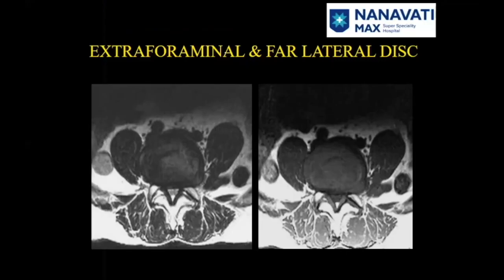This is extra-foraminal or far lateral disc herniation. This particular patient has a degenerated posteriorly bulging L5-S1 disc, but what is symptomatic is this left extra-foraminal or far lateral component which causes left L5 radiculopathy. Note the normal right L5 nerve root here for comparison. The surgical approach for this patient will be extra-spinal, and that is why it is important to report extra-foraminal herniation.